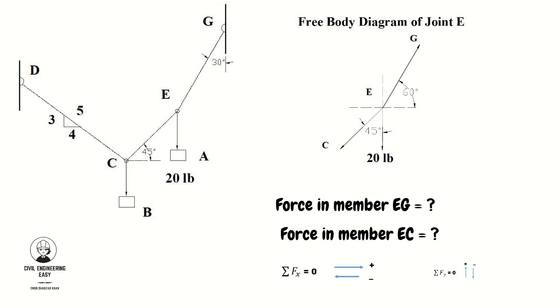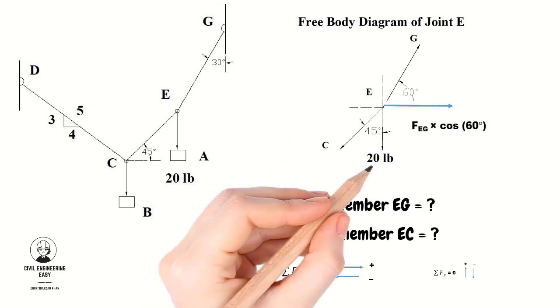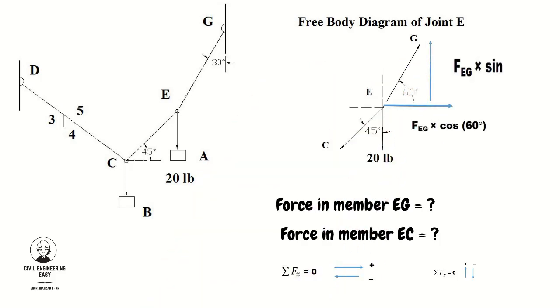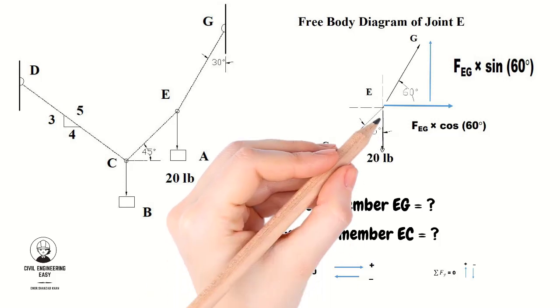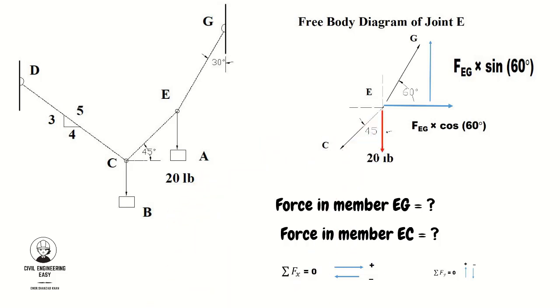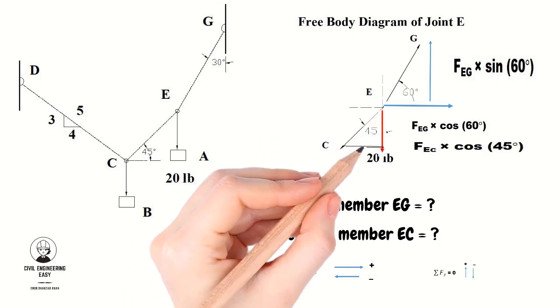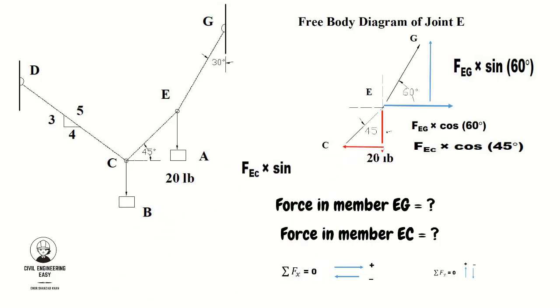Before using the equilibrium equations, resolve the forces in the free body diagram into their rectangular components. The horizontal component of FEG is FEG × cos(60°) and the vertical component is FEG × sin(60°). Similarly for FEC, the horizontal component is FEC × cos(45°) and the vertical component is FEC × sin(45°).